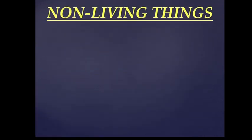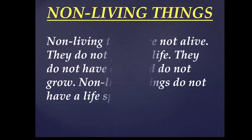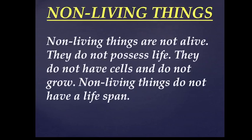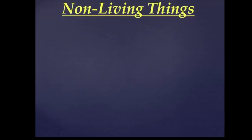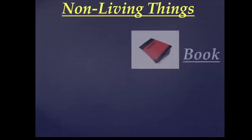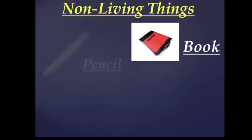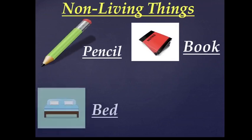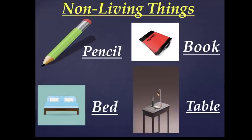Next is non-living things. Non-living things are not alive. They do not possess life. They do not have cells and do not grow. Non-living things do not have a life span. Some of the non-living things are book, pencil, bed, table, etc.